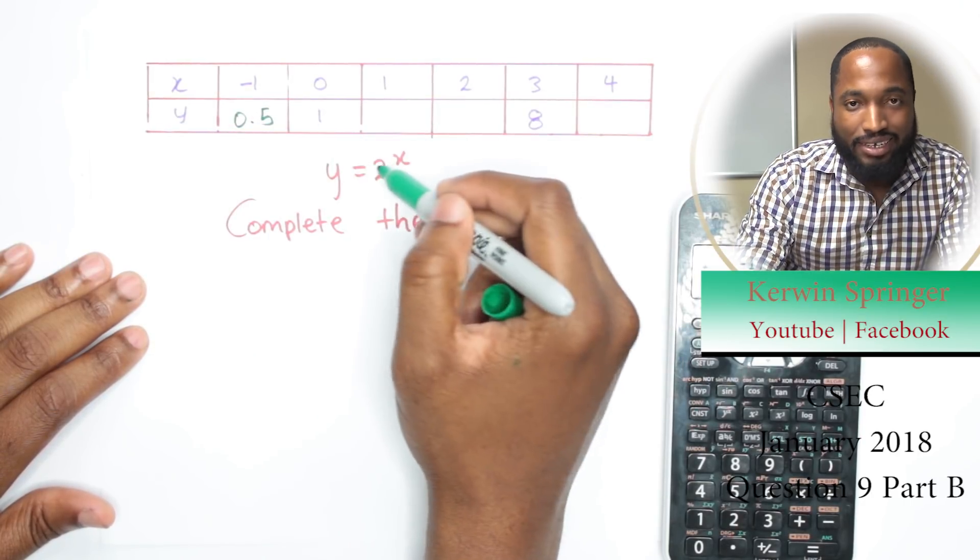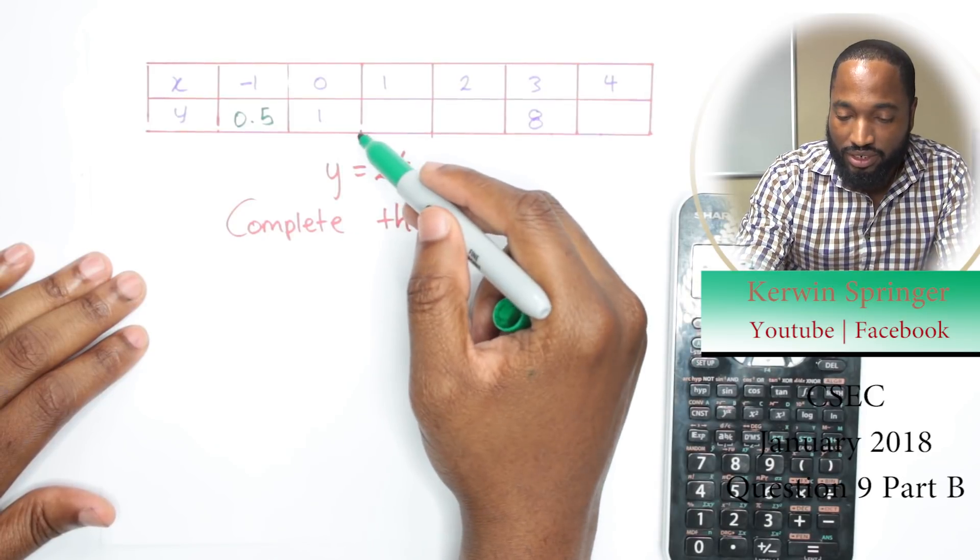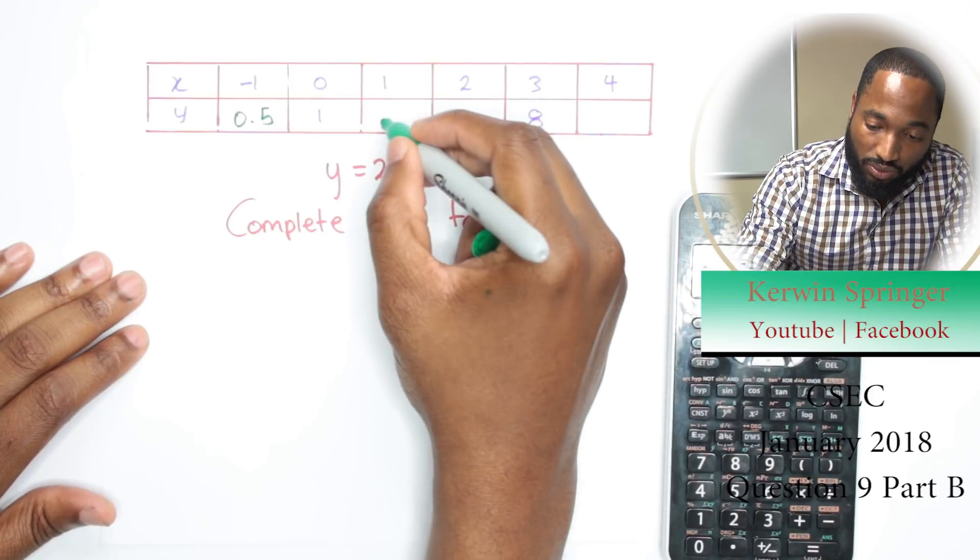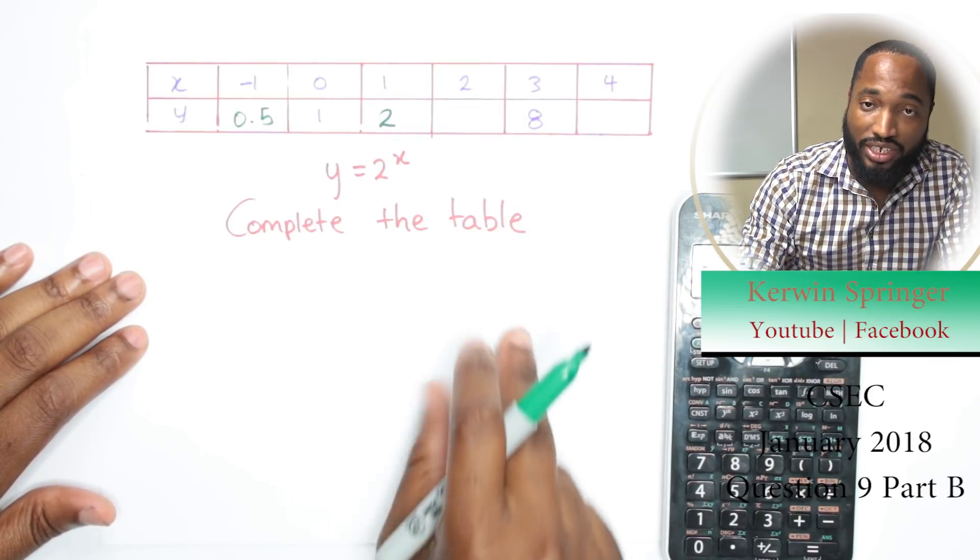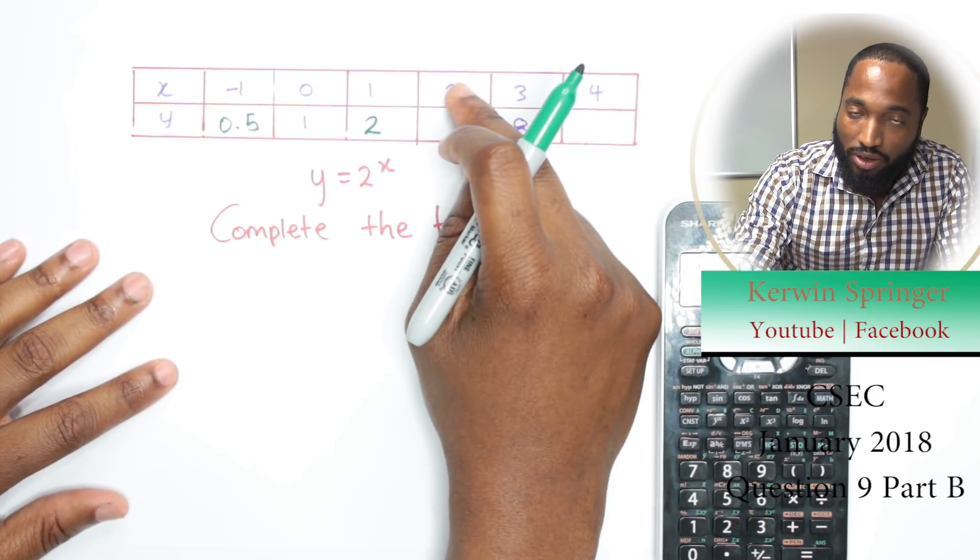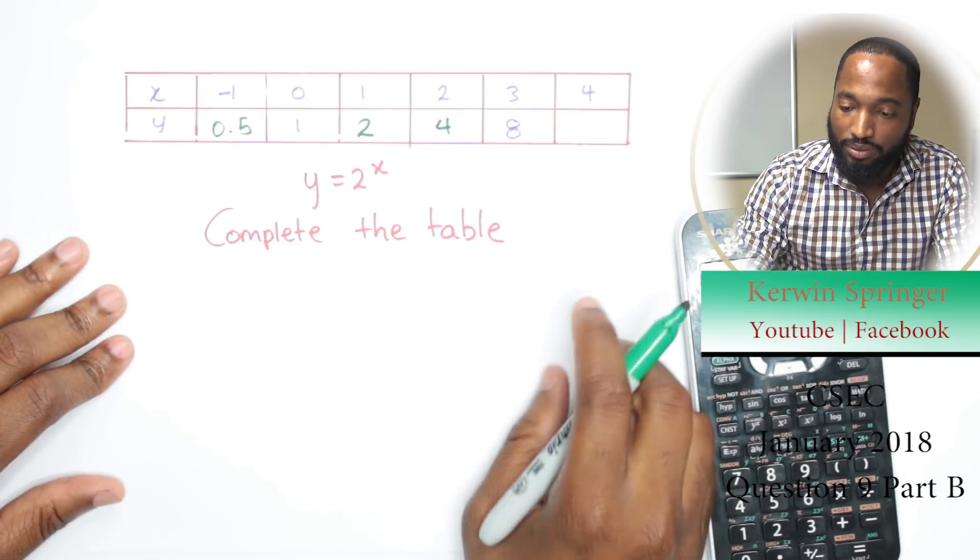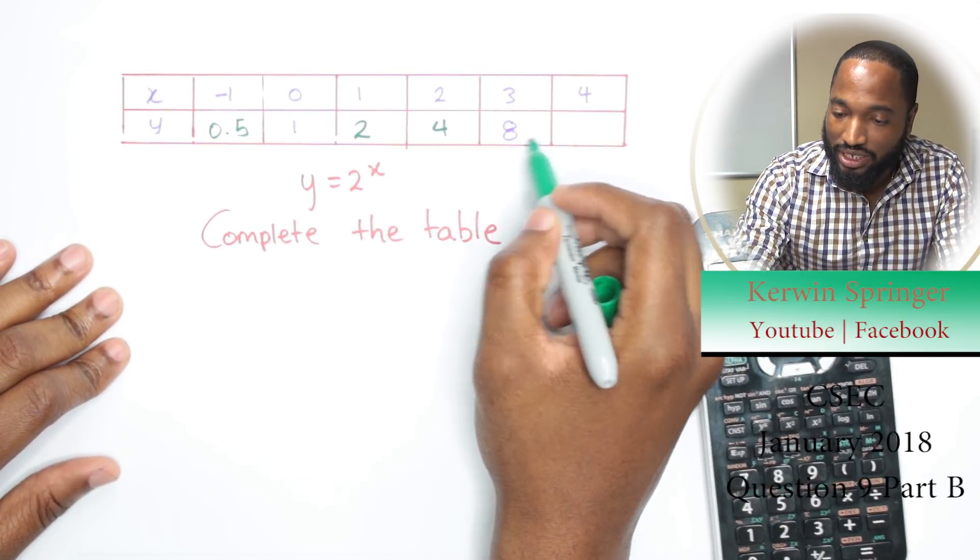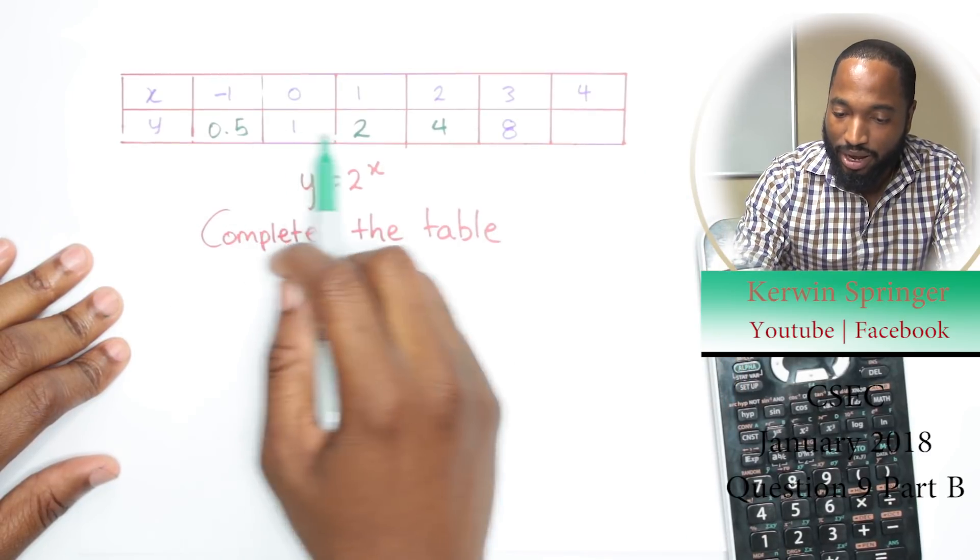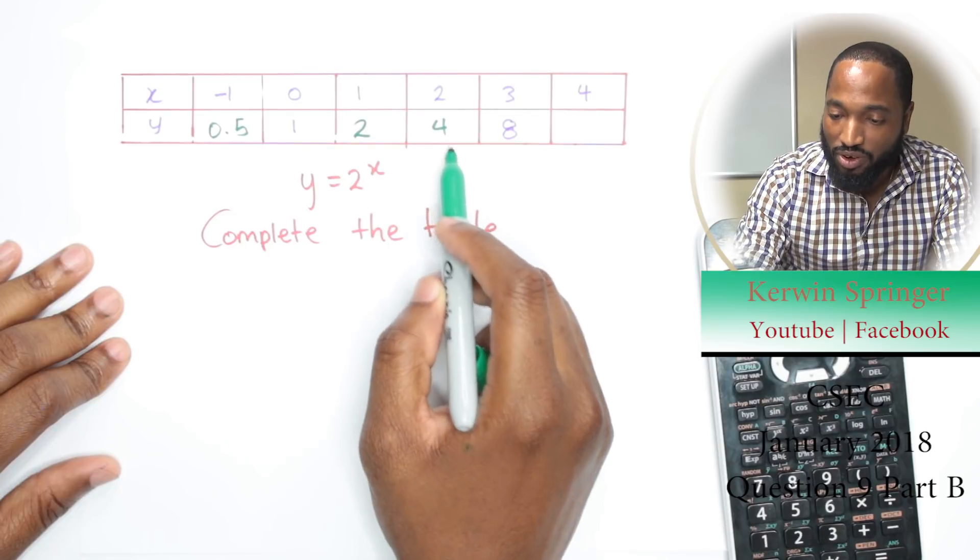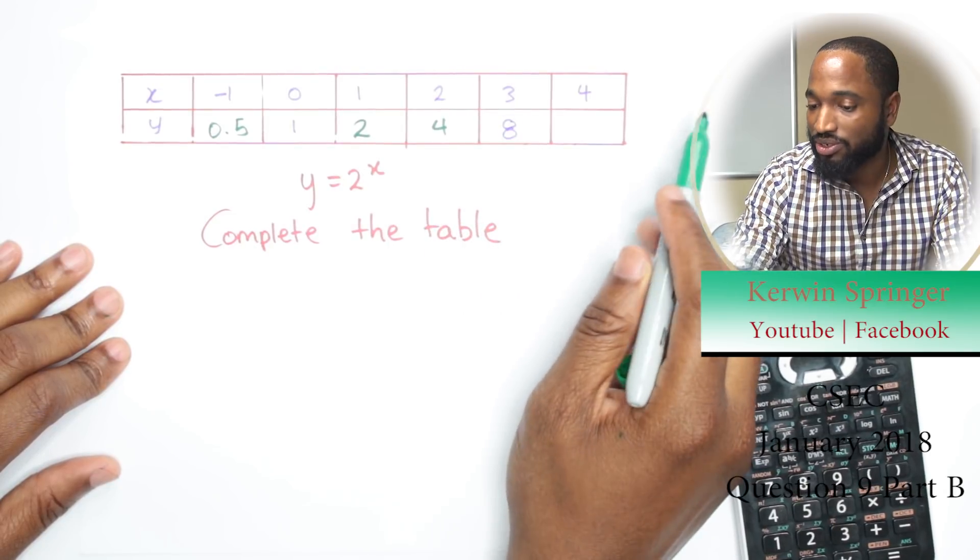So negative 1, this is 0.5. 2 to the power of 0 is 1—any number to the power of 0 is 1, but they already give us that. 2 to the power of 1 is 2—any number to the power of 1 is itself. 2 to the power of 2 is 2 squared, which is 4. 2 to the power of 3 is 8, and you see the pattern here: multiply everything by 2 as you're going up.